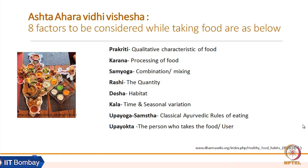Prakriti refers to the quality and characteristic of food. Karan means how the food is being processed. Samyog refers to how the combination or mixing is done. Rashi is about in how much quantity that food is taken. Desh refers to which habitat or region that food is used or consumed.